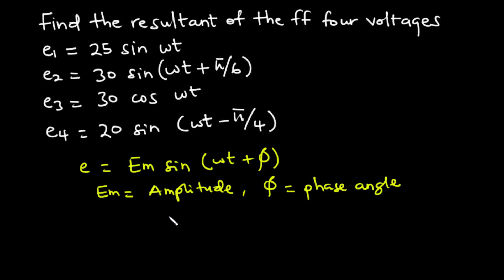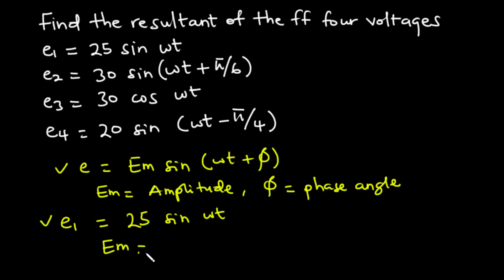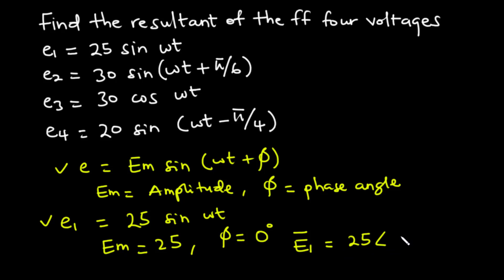So what we are going to do is to compare the individual voltages — E1, E2, E3, E4 — with the equation for the standard sinusoidal waveform. And then from that, we can generate the amplitude and the phase angle for the individual voltages, and then we are going to sum them up. Now for E1, we have 25 sine omega t, and comparing that with E, we have Em to be 25 and phi to be 0 degrees. So to represent E1 in the phasor form, we have E1 bar equals 25 angle 0 degrees.